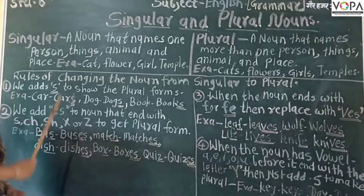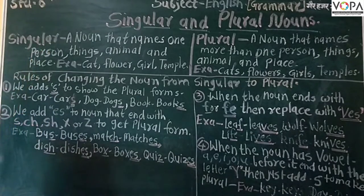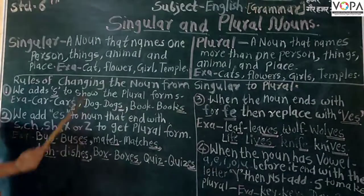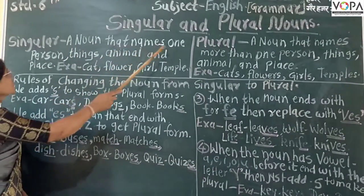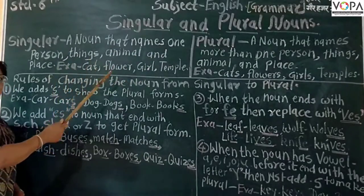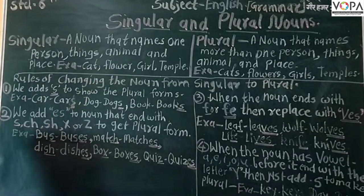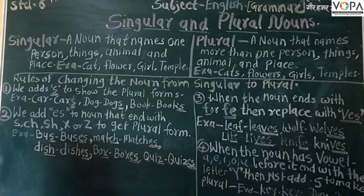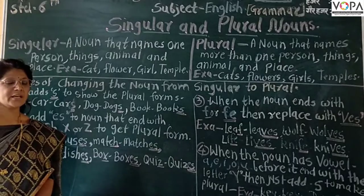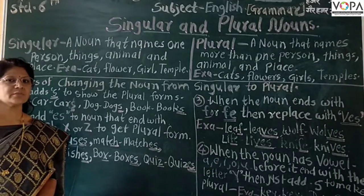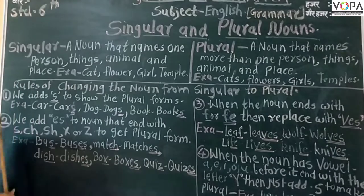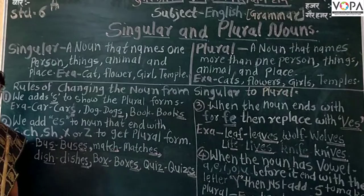First we see the singular noun. What is the singular noun? A noun that names one person, thing, animal, or place is a singular noun. What is singular? Singular means one person — just one person.